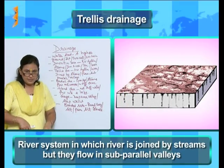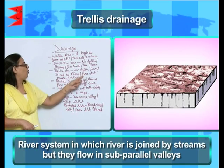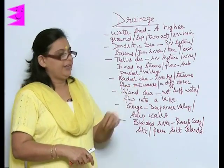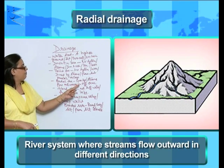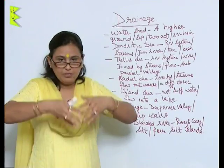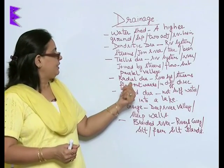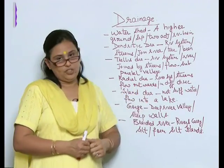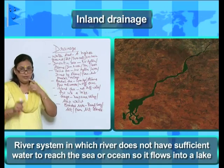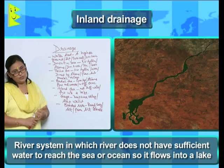Next is the trellis drainage. This river system is such that the river is joined by streams but they flow in sub-parallel valleys. Next is radial drainage. Radial drainage is a river system wherein the streams flow outwards in different directions — here the streams flow outward, whereas in the others the streams were joining the main river. Next is inland drainage, in which the river does not have sufficient water to reach the sea or ocean and it flows into a lake.